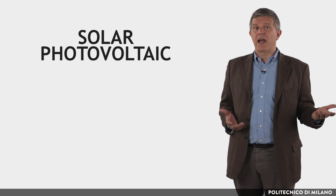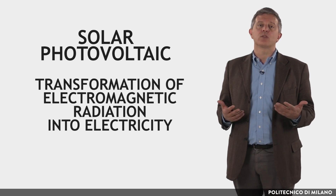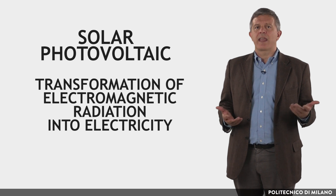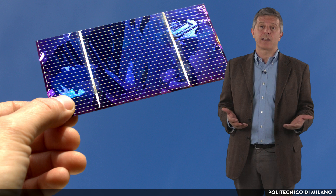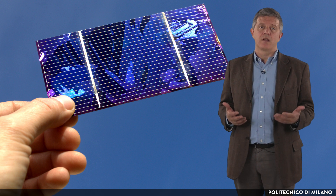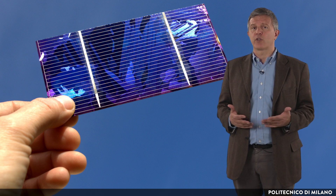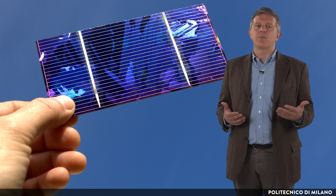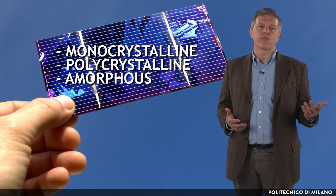A photovoltaic plant allows for the transformation of solar radiation into electricity. The conversion takes place thanks to the so-called PV cells, made of semiconductor materials. Nowadays, the most used material for photovoltaic cells is silicon, which can be monocrystalline, polycrystalline or amorphous.